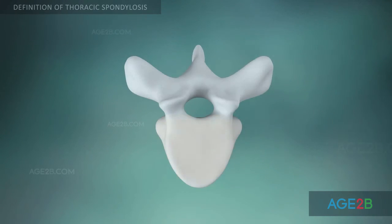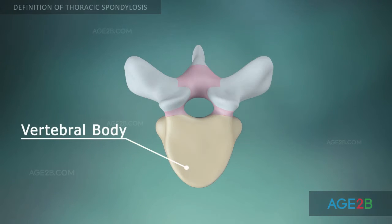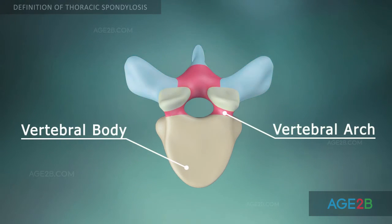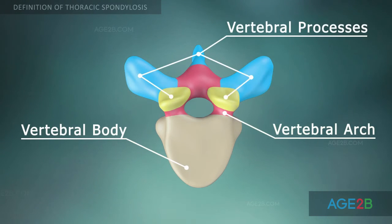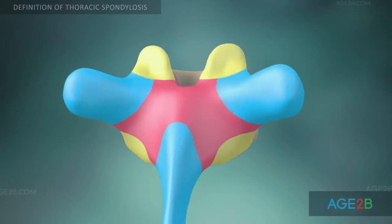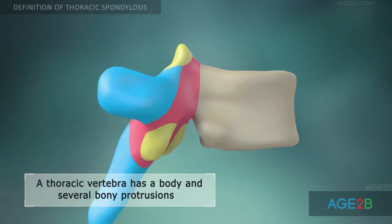A typical thoracic vertebra consists of a body and a vertebral arch, which has several processes for articular and muscular attachments.